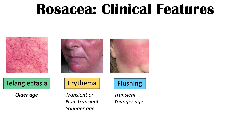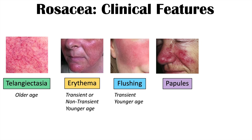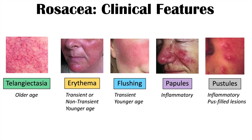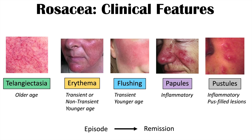The papulopustular subtype leads to papules — inflammatory raised skin lesions — and pustules, which are pus-filled. These can be mistaken for acne and are often termed adult acne or acne rosacea, but it is not the same condition as acne vulgaris because there are no comedones. Patients typically experience episodes of these lesions followed by periods of remission, triggered by various factors.